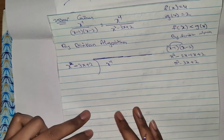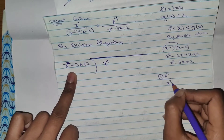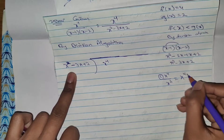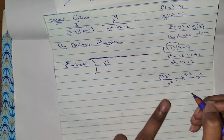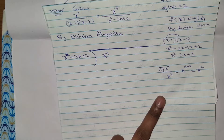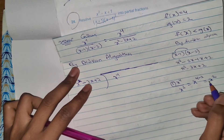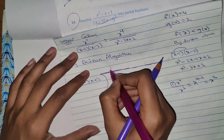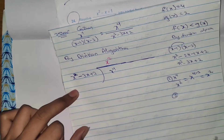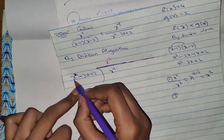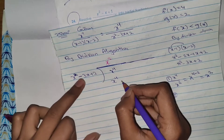So the first step is: x power 4 should be divided by x square. x power 4 divided by x square gives x power 2. So the numerator is 4 times and denominator is 2 times, so x power 4 will be divided by x square. x power 4 equals x power 4 minus 3x cube plus 2x square.